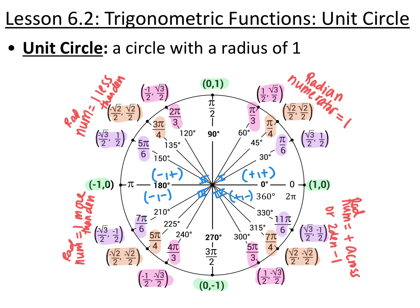Lesson 6.2 is trig functions and the unit circle. The unit circle is a circle with a radius of 1, with specific angle measurements around it that help us with trig functions. We start at 0 degrees on the positive x-axis and move counterclockwise. Pi over 2 or 90 degrees is at the top, pi or 180 degrees is all the way across, 3 pi over 2 or 270 is at the bottom, and 2 pi or 360 brings you back around.